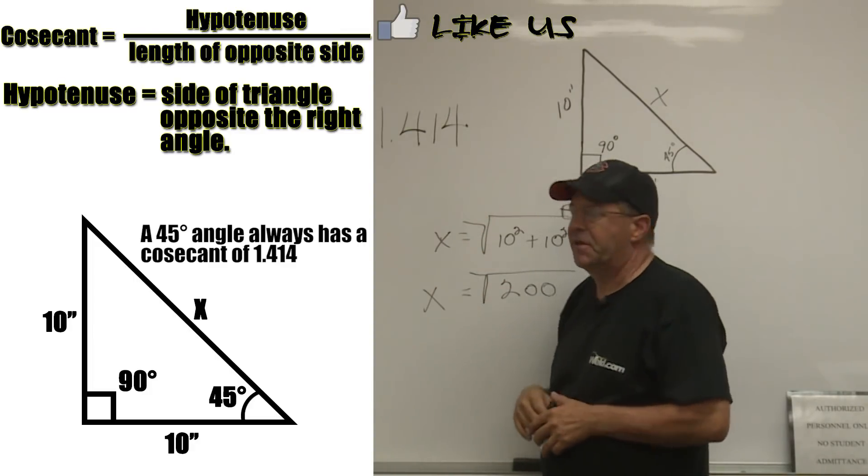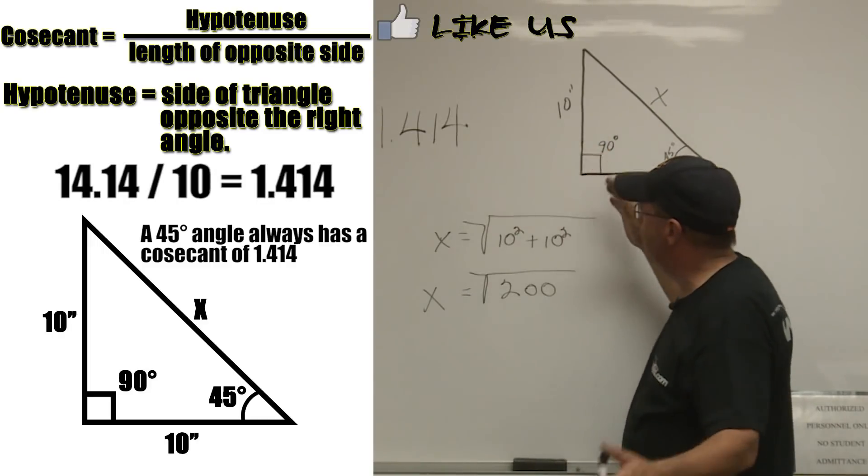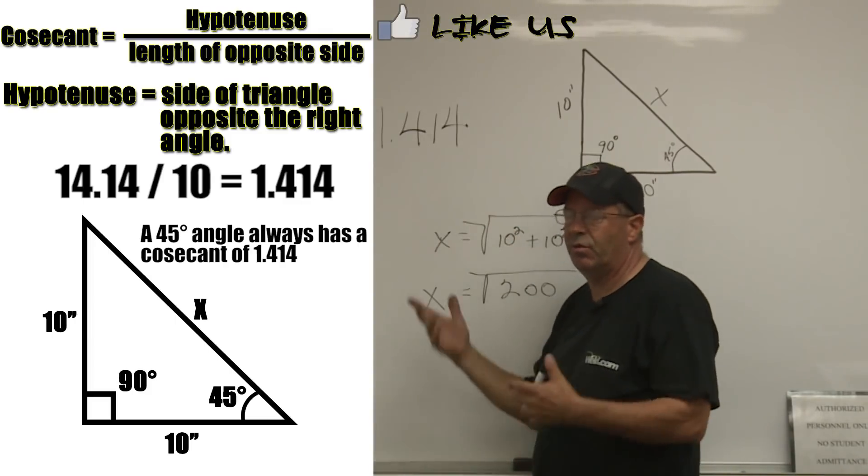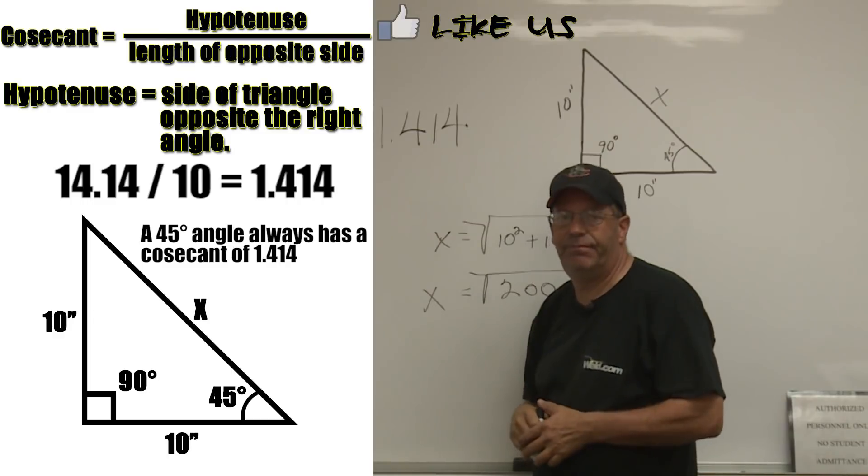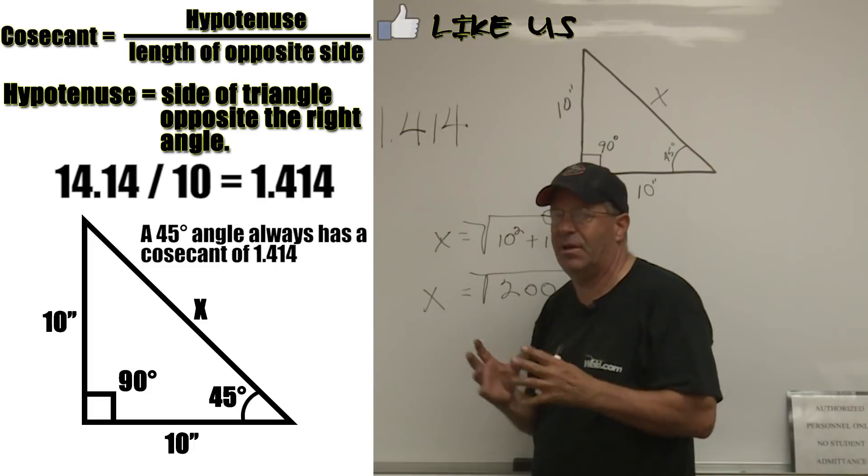Because if this was 10 inches and I needed to cut a brace in there real quick, then I would be cutting it 14.14 inches. Well, what's 0.14? Cut it off at 14.125. That's an eighth of an inch and you're going to be close enough, especially if you're gas metal arc welding. A little bit of gap is fine.